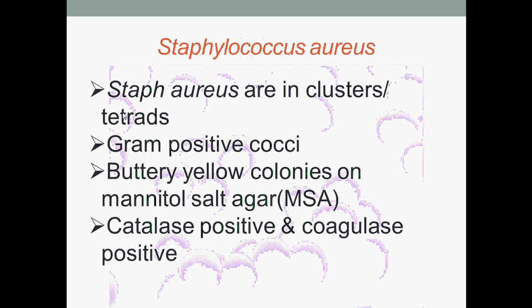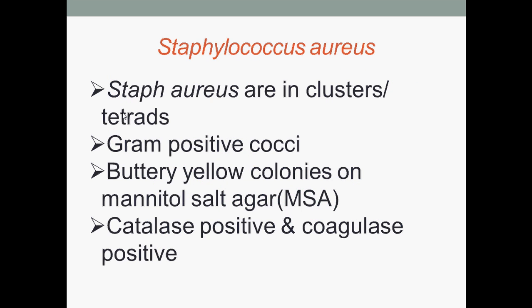The first bacteria we are going to look at is Staphylococcus aureus. Staph aureus are arranged in clusters, and they are Gram-positive cocci, meaning they appear purple when viewed under a microscope right after performing a Gram stain.